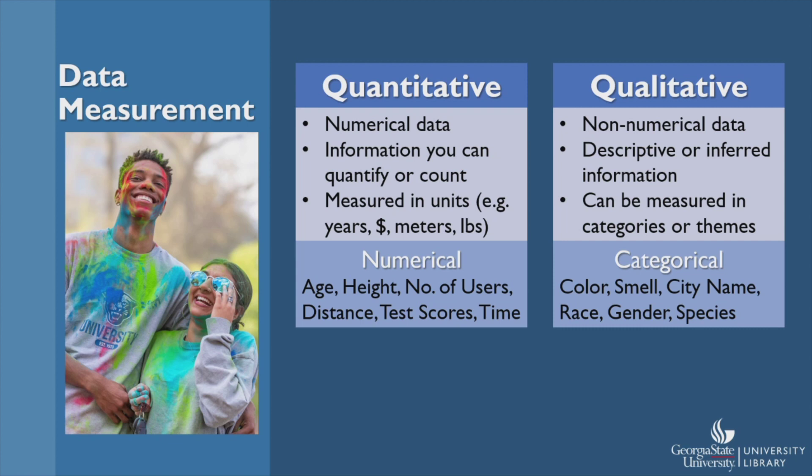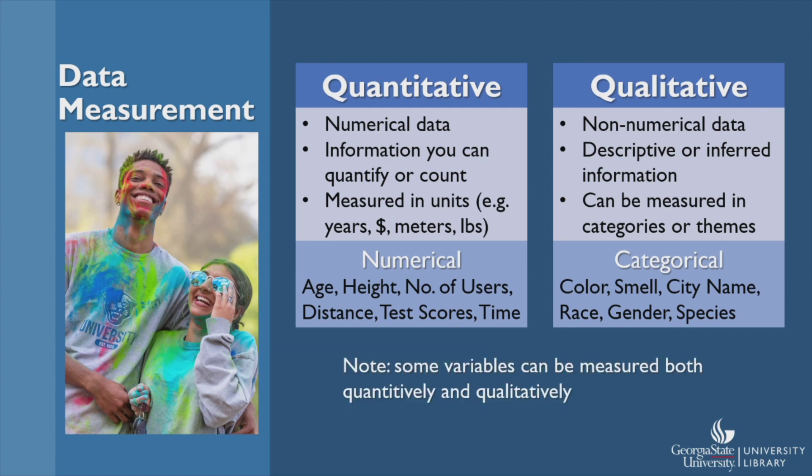Data scientists and researchers in certain fields often refer to qualitative data as categorical and quantitative data as numerical. Many variables can be measured using both numbers and categories. For example, let's look at these two students and think about the variable height. I could say that one student is taller while the other is shorter — those terms would count as qualitative. However, if I gave you their height and said one student is 6 feet 2 and the other student is 5 feet 4, that would be quantitative data. Age can also be measured numerically and categorically. Let's say that one of these students is 19 and the other is 21 years old — that would be numeric or a quantitative measure. While describing both students as young adults would be categorical or qualitative.